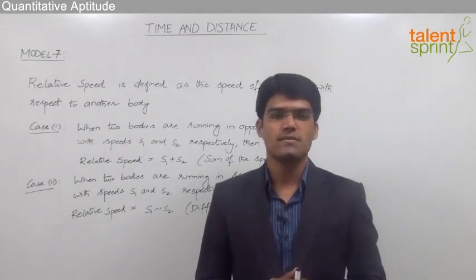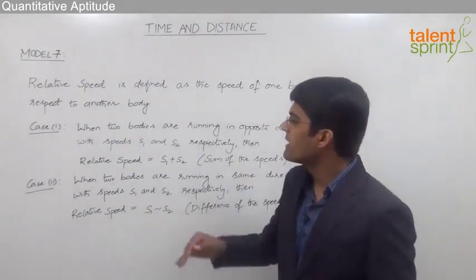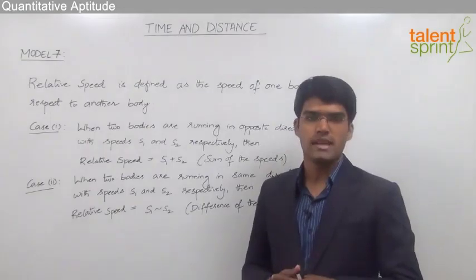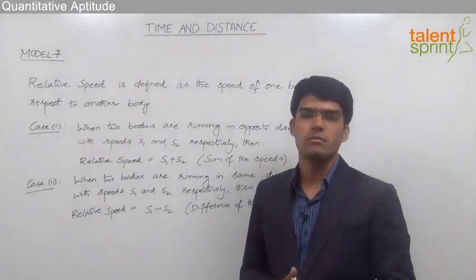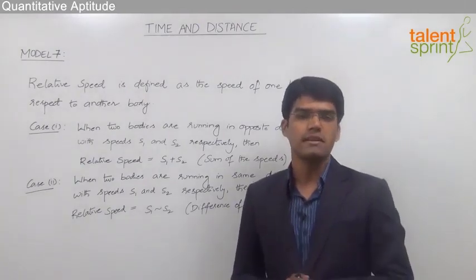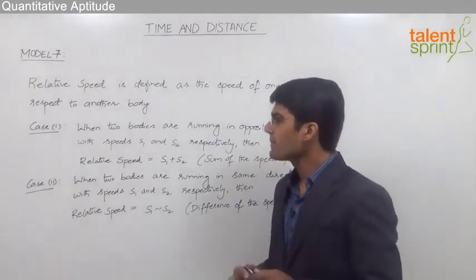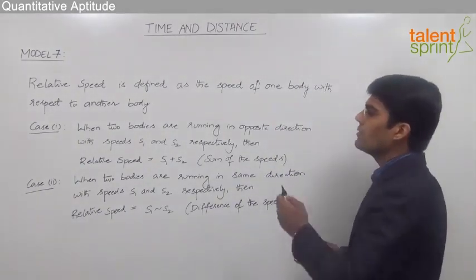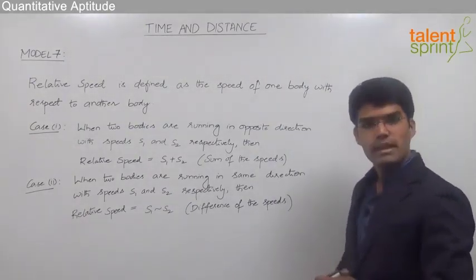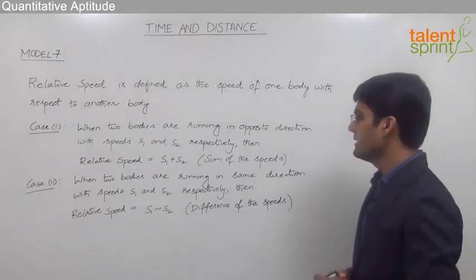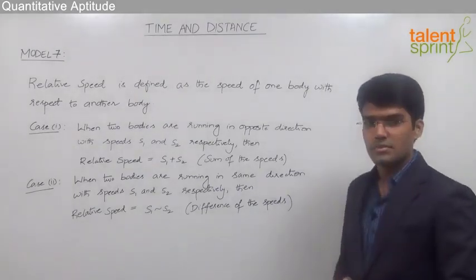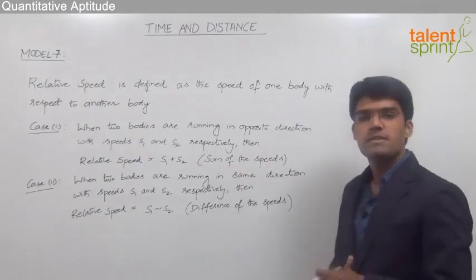There are two possible cases for relative speed. Case one is when the two bodies are running in opposite directions with speeds s1 and s2 respectively — the relative speed is equal to s1 plus s2, that is the sum of the speeds.